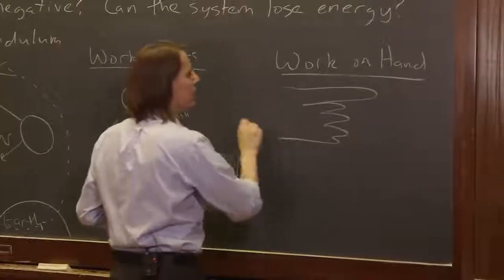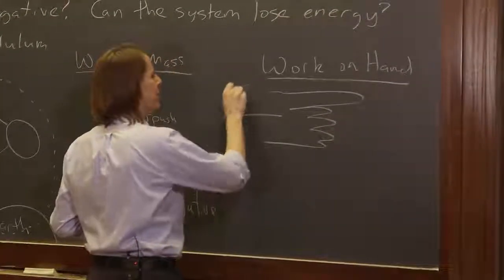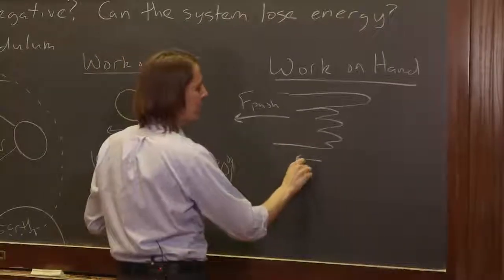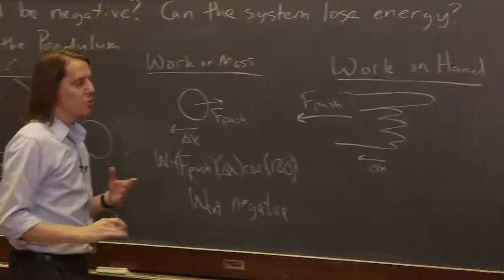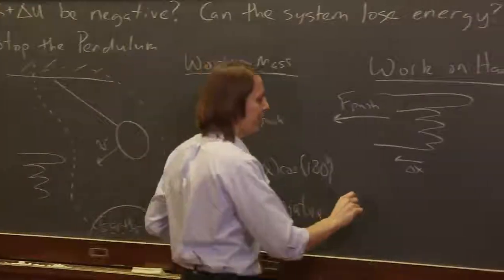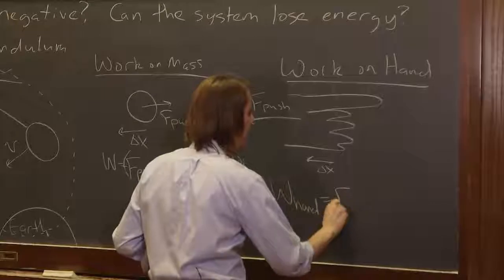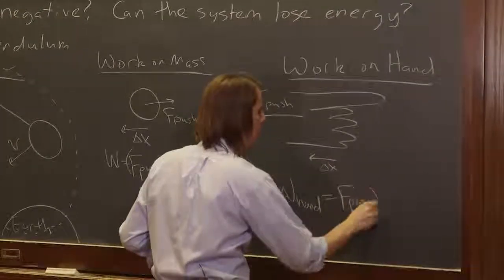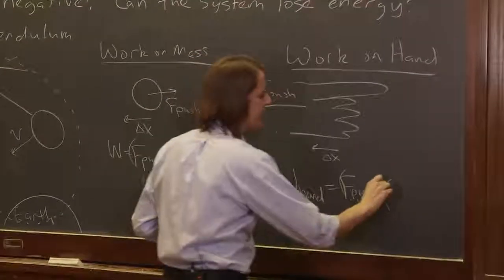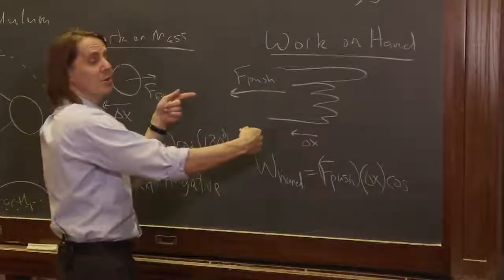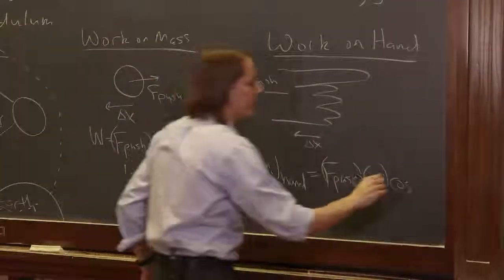It feels the reaction force F push. And this push happens over the delta x like that. So you can see what's going to happen. There is going to be work on the hand and it's going to be positive. It's going to be F push times delta x times the cosine of the angle between them is zero. Both are going the same way. Zero degrees.